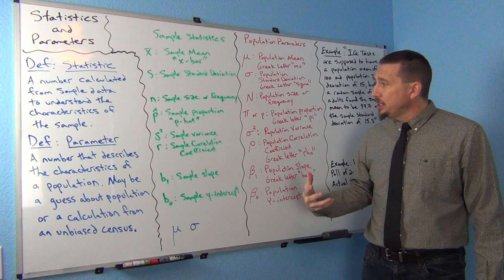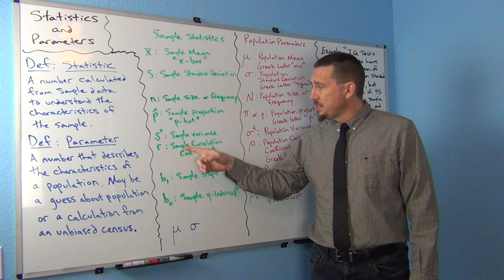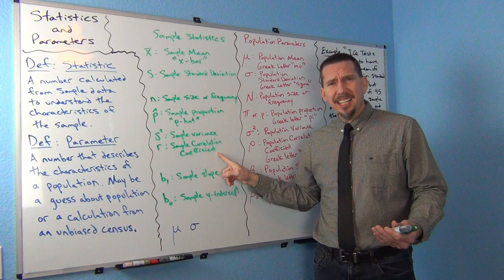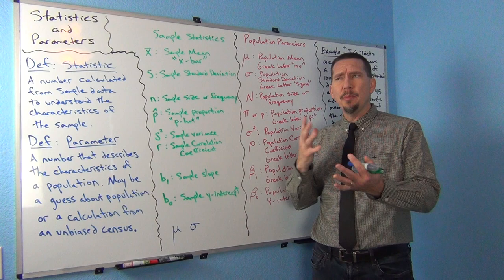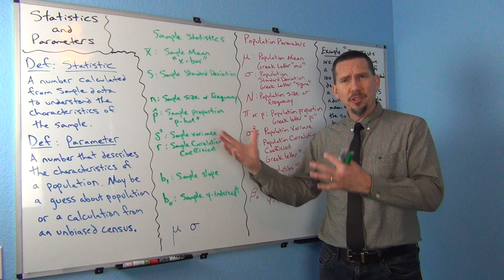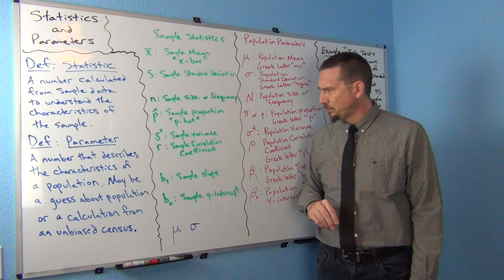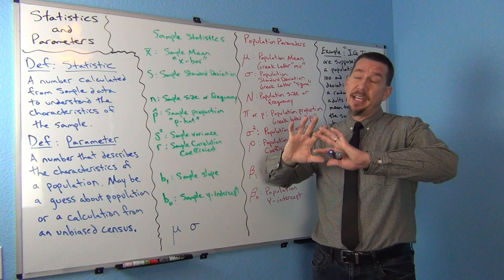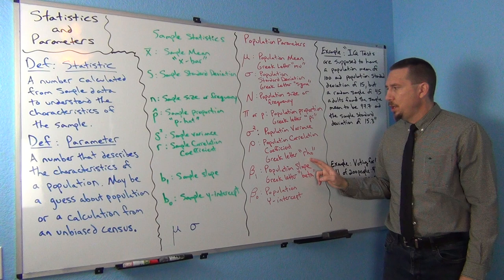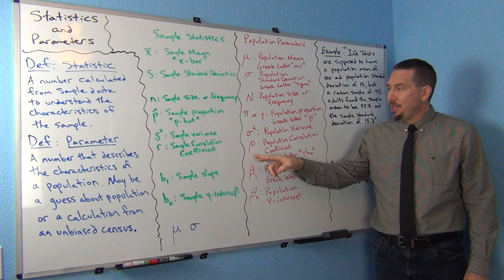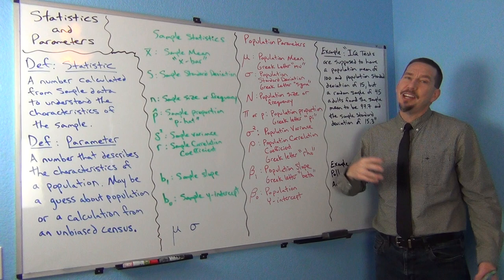Here are a few more advanced letters we'll get to later. The sample correlation coefficient is lowercase r — a statistic that tells us how much of a relationship two different quantitative variables have. For population correlation, we use the Greek letter rho, which looks like a squiggly p but is actually the population correlation coefficient. Correlation tests are often called rho tests.